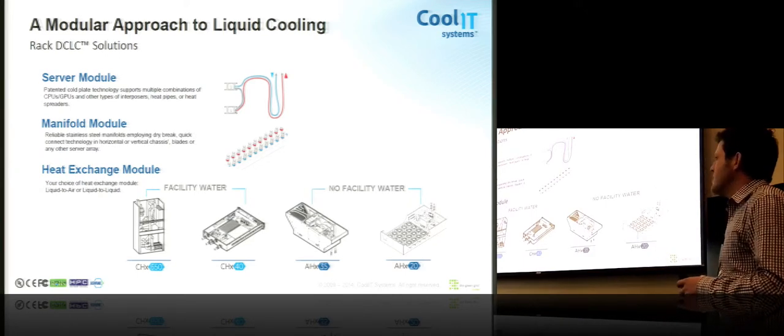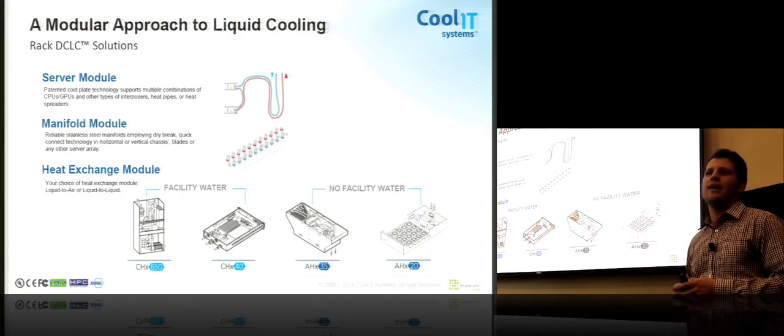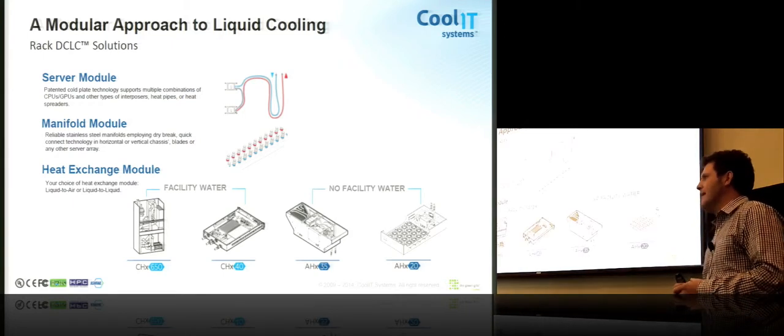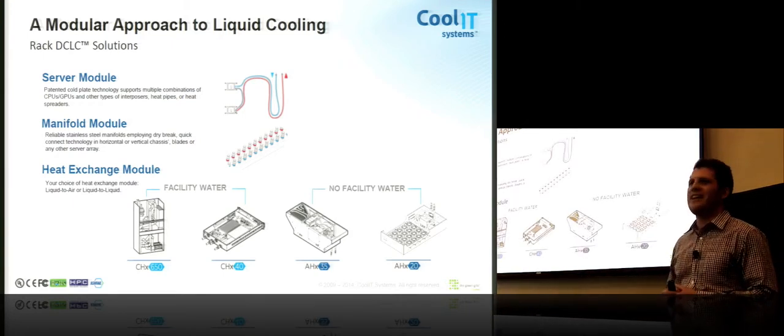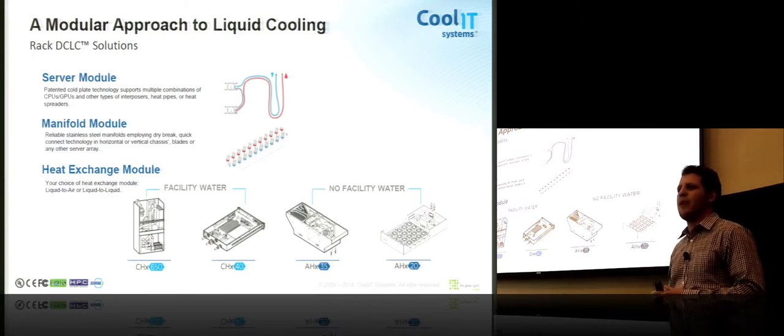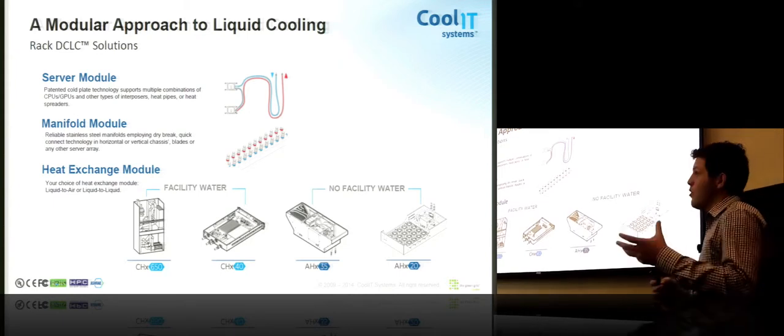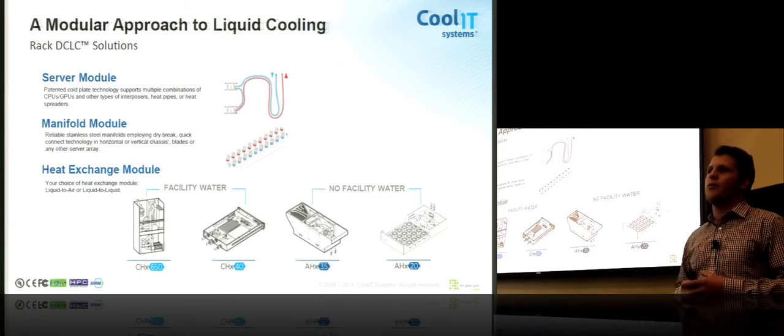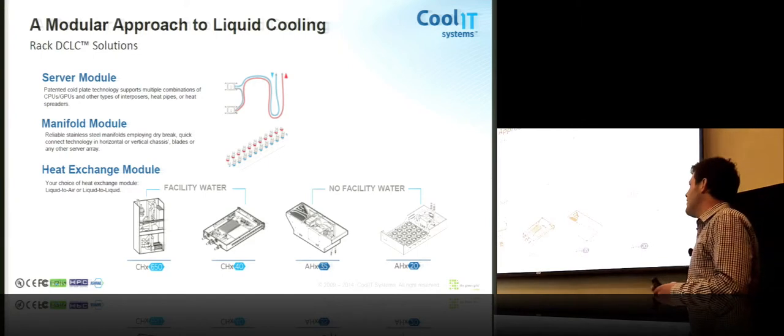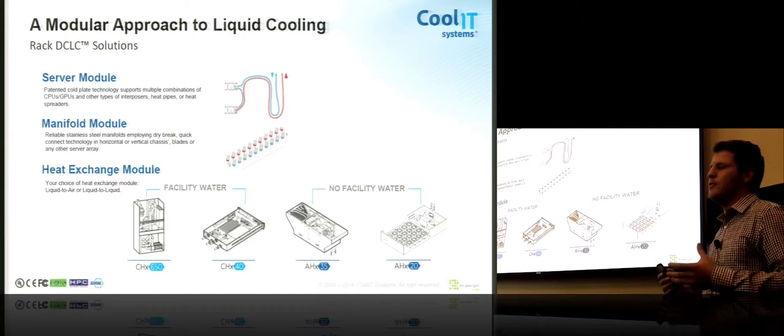Next on the module list is manifold modules. They're quite simple. It's a supply and return tube that gets racked at the back of the rack usually, just like a PDU. It is equipped with a whole bunch of quick connect sockets, and each individual server will plug into one level on this manifold. Essentially what we're doing is delivering treated cool or warm coolant to the servers. They're picking up the load of the cold plates, and they're evacuating it out the other side of the manifold.